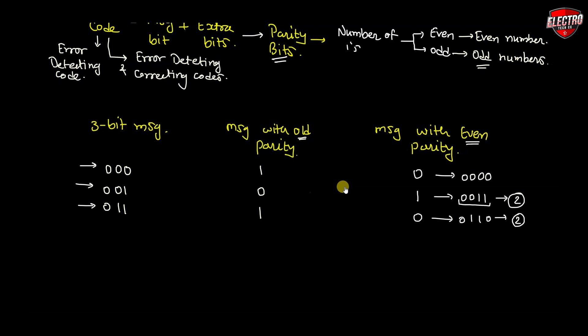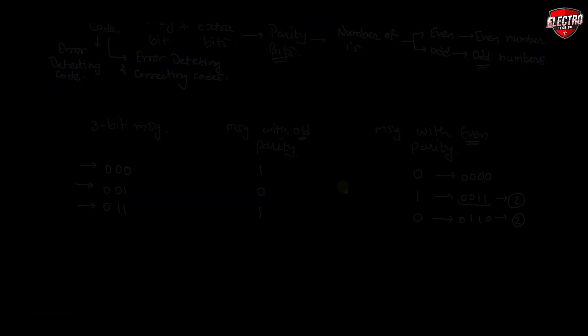This way we can create messages with even parity and odd parity using given message bits. In the next video we will discuss the most important Hamming code method to detect and correct error bits in the given information at the receiver side. Thank you.